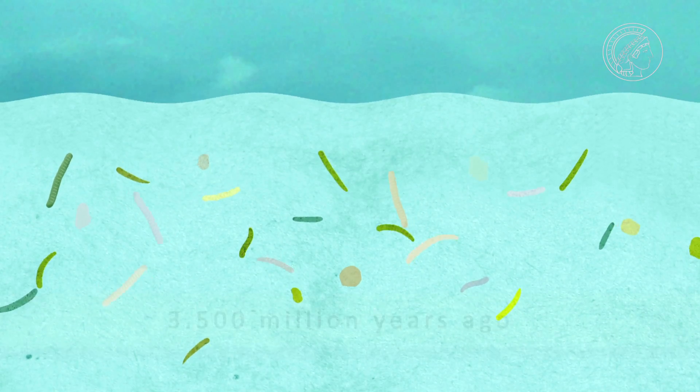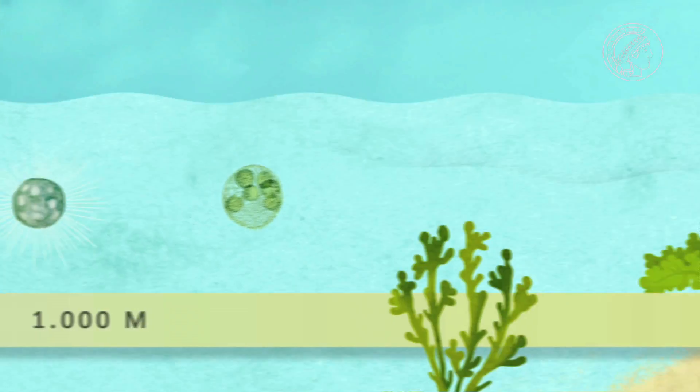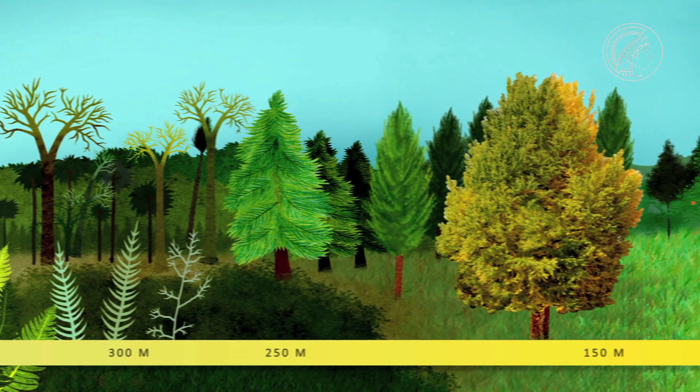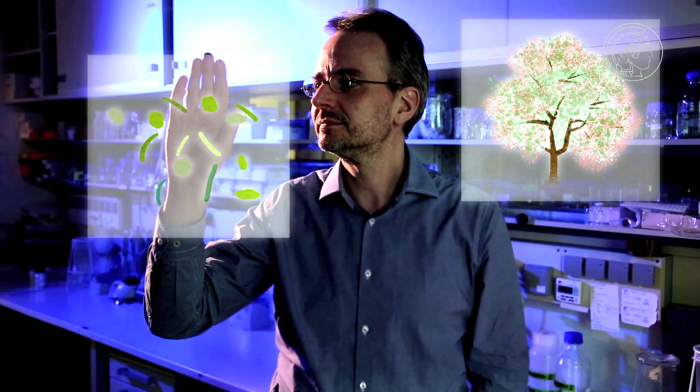Just imagine that we could watch the evolution of plants, which began about three and a half billion years ago, in time-lapse — millions of years shrinking into a few minutes. Professor Ralph Bock aims to do just that: to make evolution happen in his laboratory and study one of the main questions of evolutionary science — how a primitive cell could develop into the diversity of life we know today, and whether the main steps can be recreated in the laboratory.